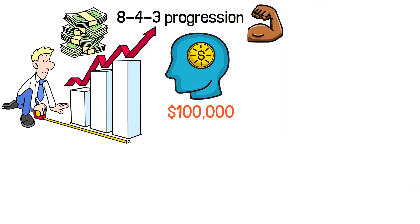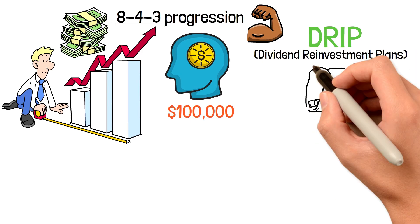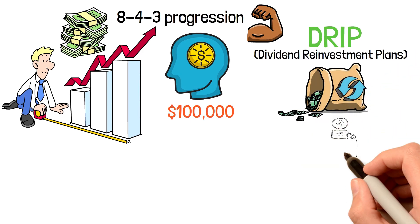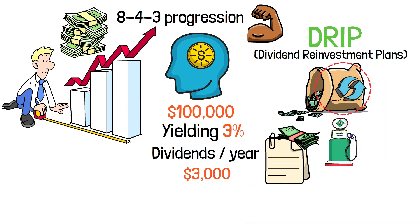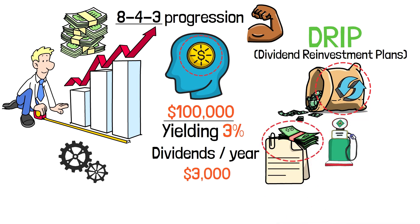The 8-4-3 rule becomes even more powerful with DRIP or Dividend Reinvestment Plans. When you automatically reinvest dividends, you're adding fuel to the compound interest fire. A $100,000 portfolio yielding 3% annually generates $3,000 in dividends per year. If you reinvest those dividends, they buy more shares, which generate more dividends, which buy more shares.